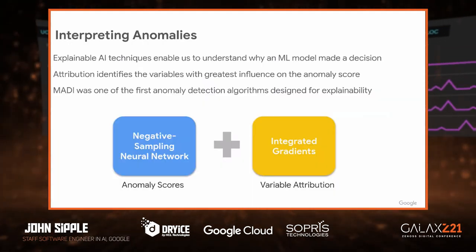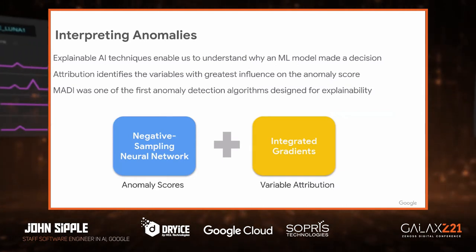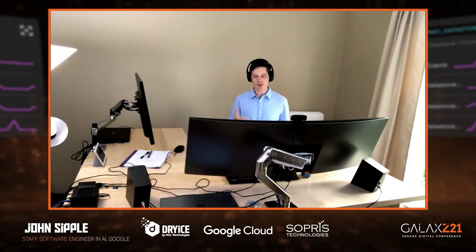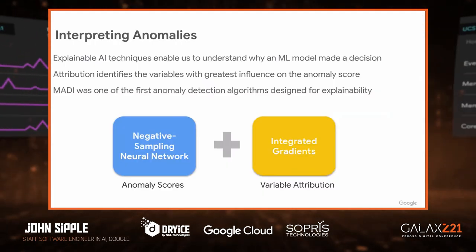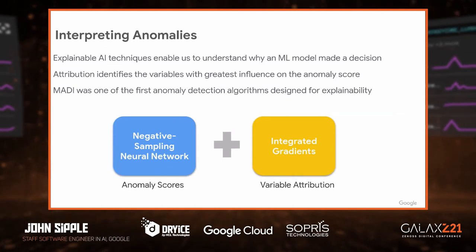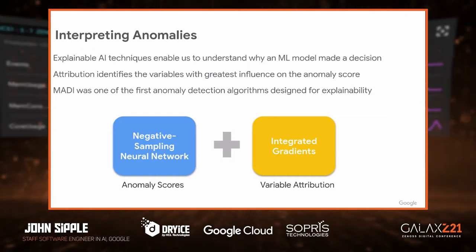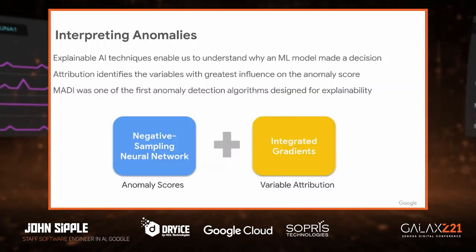What does an interpretation or explanation for an anomaly look like? Back around 2017, explainable AI really came about because of a need to understand complex AI models and what made them make a particular decision. These explainable AI techniques do attribution — if you have an image classifier, the technique will highlight the pixels on the image that were most influential in the classification decision. For anomaly detection, it's no different: instead of looking at pixels, the explainable AI technique will emphasize those features that had the greatest influence on the anomaly detector's decision.